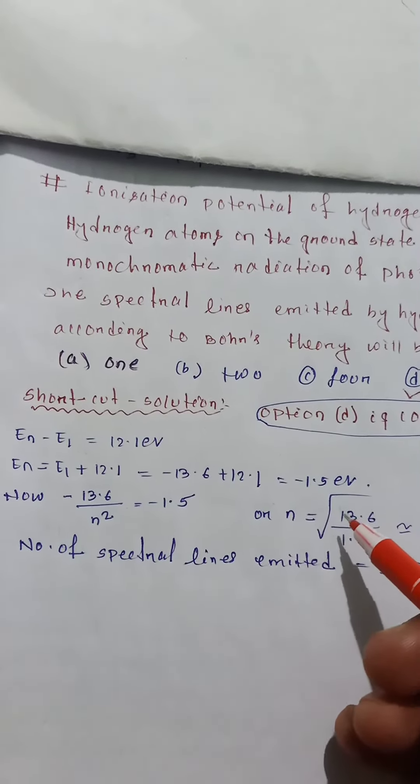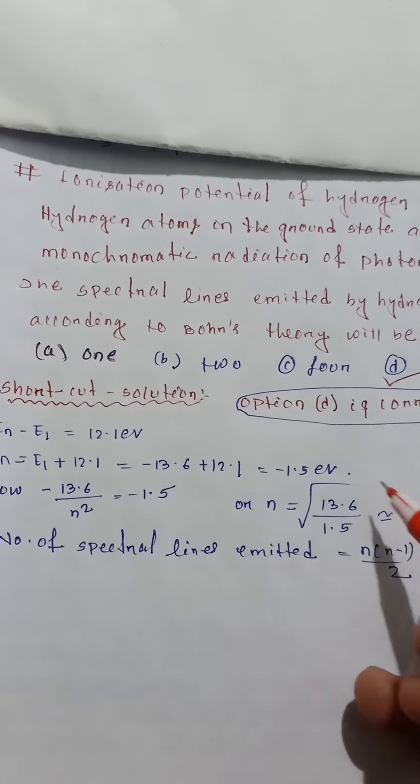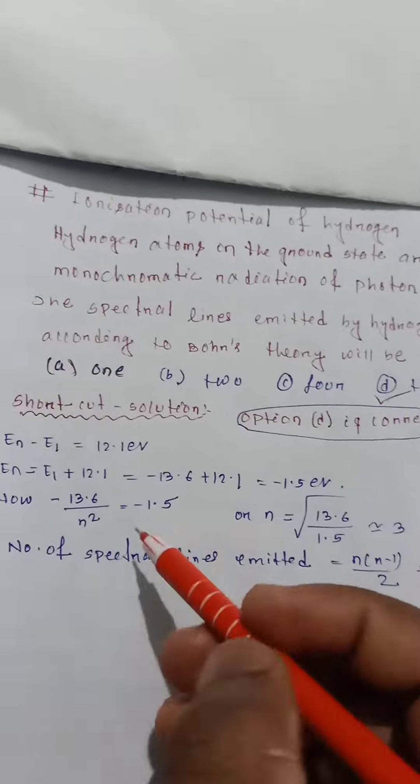N square is equal to 13.6 by 1.5. Then n is equal to root of 13.6 by 1.5, approximately 3.